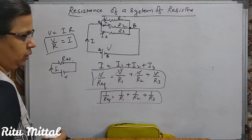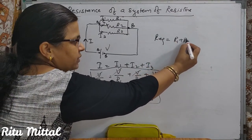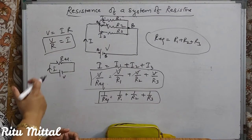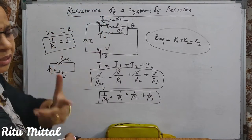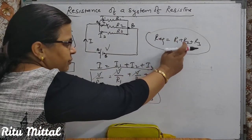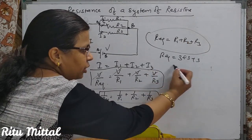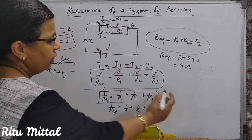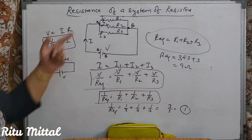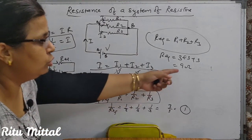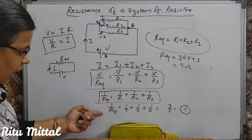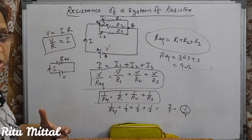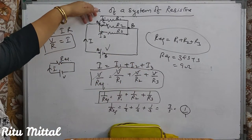Aap ek cheez notice karo. Series connection mein R equivalent = R1 + R2 + R3 — sab add hote the. Parallel mein reciprocal karke add karte hain. Example: teen resistance of 3, 3, 3 ohms. Series mein: 3+3+3 = 9 ohms. Parallel mein: 1/R_eq = 1/3+1/3+1/3 = 3/3 = 1, so R equivalent = 1 ohm. Matlab parallel connection mein R equivalent value kam ho rahi hai. Jab series connection hota hai toh net resistance increase hota hai. Jab parallel connection hota hai toh net resistance kam ho jata hai.